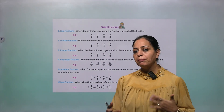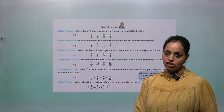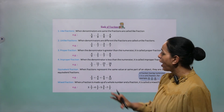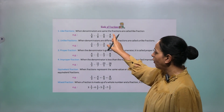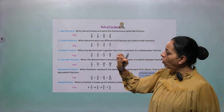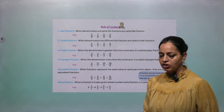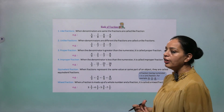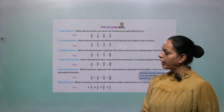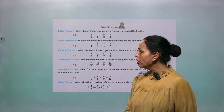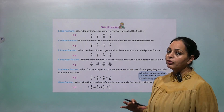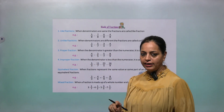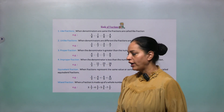Now we are talking about types of fractions. The first type is like fractions, which means when denominators are the same. For example: 5 by 8, 7 by 8, 6 by 8, 4 by 8 — the denominator is 8 in all fractions, so these are like fractions. The second type is unlike fractions, when denominators are different. Third is proper fractions — when the numerator is smaller than the denominator — like 4 by 9, 2 by 5, 5 by 7.